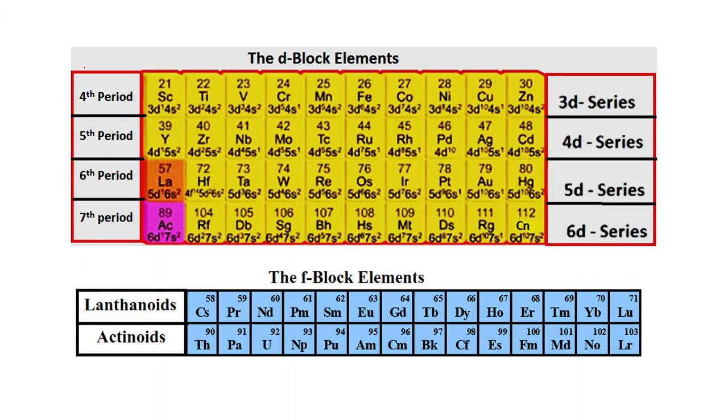Now this is the part of periodic table indicating the D block elements and F block elements. The first one is called 3D series because the last electron enters in 3D subshell and this belongs to the 4th period. How can we identify the period? The principal quantum number of last shell. In this case, last shell is 4th. That is why this belongs to the 4th period. In the same way, 4D series belongs to the 5th period, 5D series belongs to the 6th period, and 6D series belongs to the 7th period.